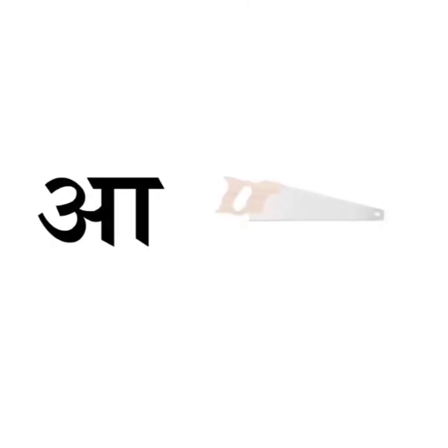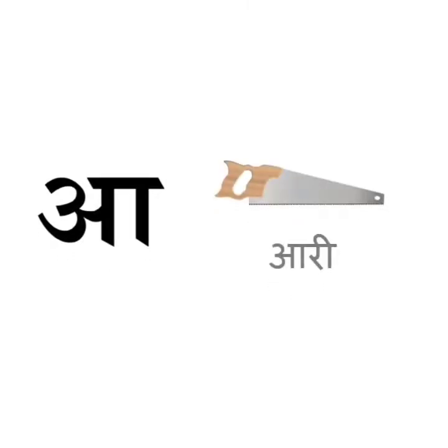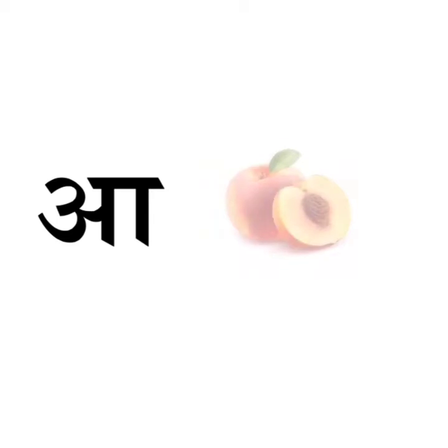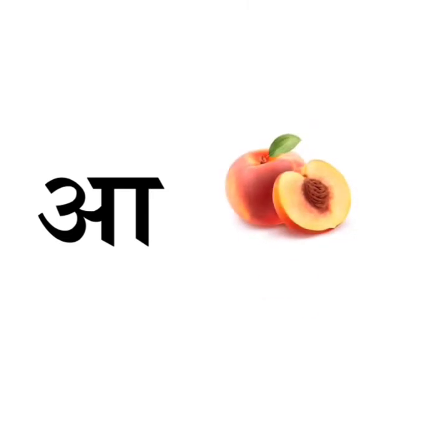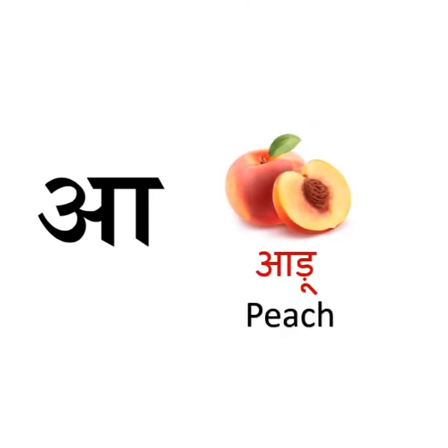A se ari — ari means saw. A carpenter uses it to cut the wood. A se aadu — aadu means peach. Peach is a fruit.